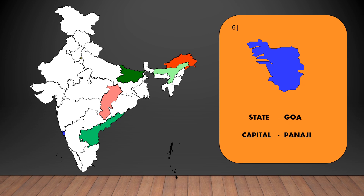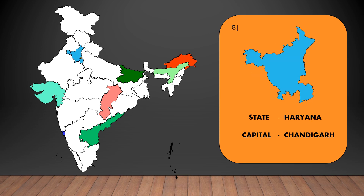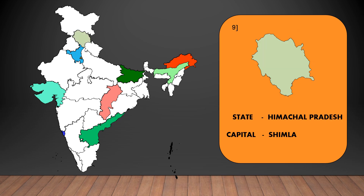The capital of Goa is Panaji. The capital of Gujarat is Gandhinagar. The capital of Haryana is Chandigarh. The capital of Himachal Pradesh is Shimla.